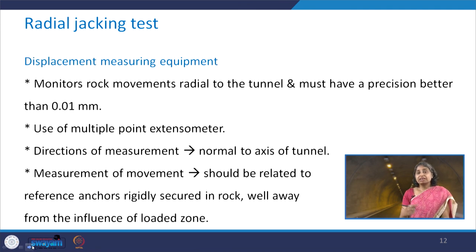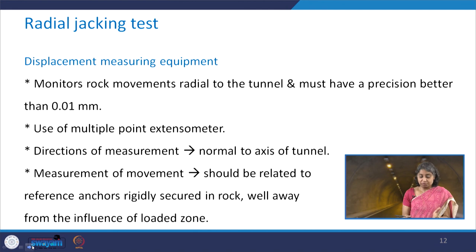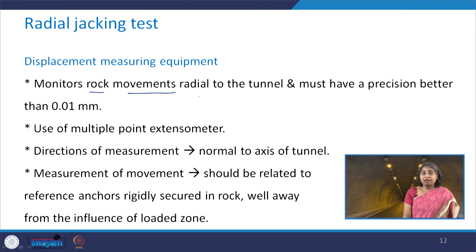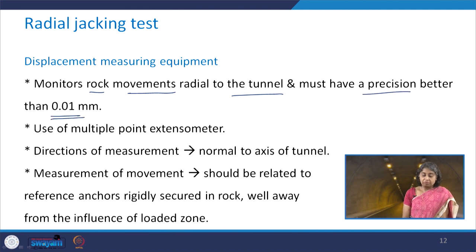The equipment for measurement of displacement in the radial jacking test monitors rock movements which are radial to the tunnel. They should have a precision better than 0.01 millimeter, and the use of multiple point extensometers comes into picture here.